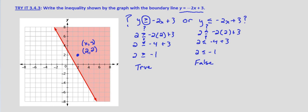This verifies that our solution of the inequality shown in the graph has the boundary line y equals negative 2x plus 3. Since it's a solid line, it's inclusive. And since greater than makes it a true statement, 2 is greater than negative 1, we know that our inequality is y is greater than or equal to negative 2x plus 3.